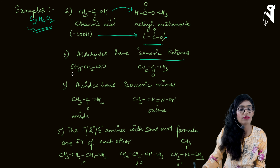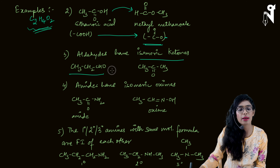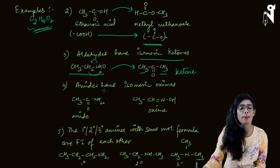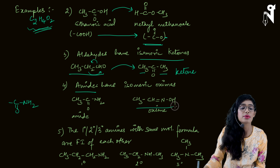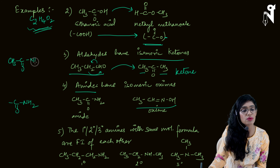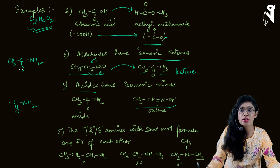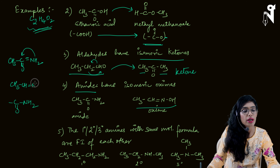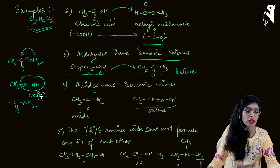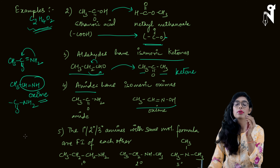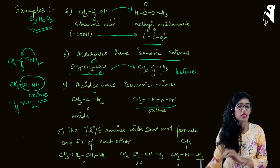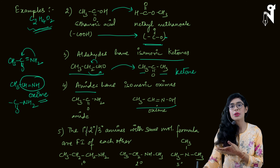Aldehydes can have isomeric ketones as functional isomers. The same molecular formula can give you an aldehyde or a ketone. For example, CH3CH2CH2CHO can become CH3COCH3 by shifting the C=O internally — it becomes a ketone. Similarly, amides (CONH2 group) can be rearranged to form an oxime. CH3C=ONH2 can be converted: break the C=O double bond, form a double bond to nitrogen, shift a hydrogen, and it becomes CH3CH=NH — the oxime group (CH=NH).